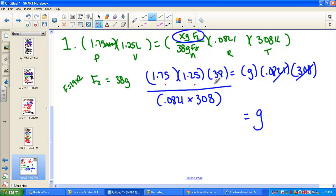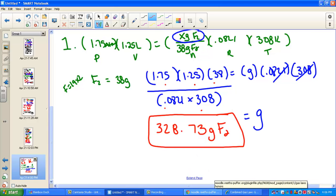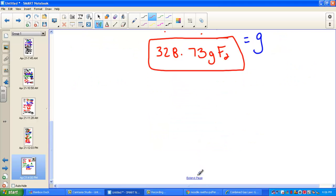Divided by, parenthesis, 0.0821, the R constant, times the Kelvin units of 308. Close parenthesis. And the number of grams, 3.28.72. Whoops, I put my decimal in the wrong spot. Let me rewrite that. 3.28.73 grams of fluorine. Process this. Just take a moment and make sure you've gone through the steps. How did I pull out X grams of fluorine? When you're ready, go on to number two.